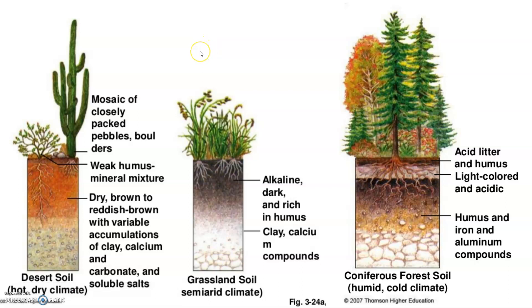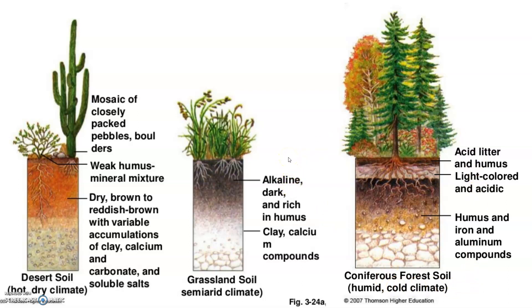Deserts don't get a lot of rain, so you don't see much humus being formed. Grasslands have constant vegetation, so there are constant nutrients being added to the soil, giving a nice A horizon. Coniferous forest soil also has lots of plants adding material to the humus, and we see nice distinct layers being formed there as well.